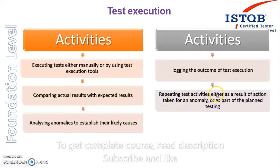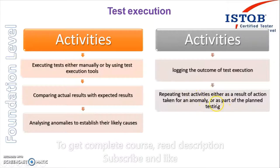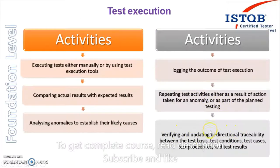The fifth activity is repeating test activities either as a result of action taken for an anomaly or as part of planned testing. As I mentioned, after finding an anomaly caused by a test environment problem, we can re-run the test cases. Also, while in the test execution stage, you still have to verify bi-directional traceability between test basis, test condition, test cases, test procedure, and test result. This traceability must be monitored throughout every test process.